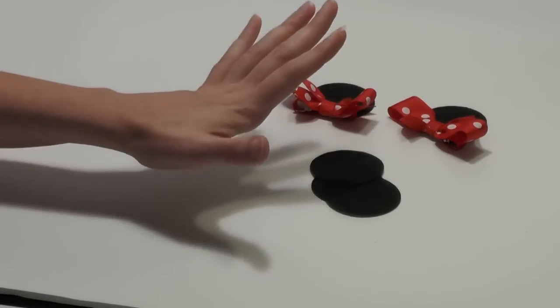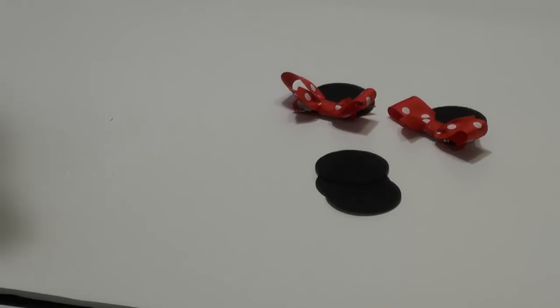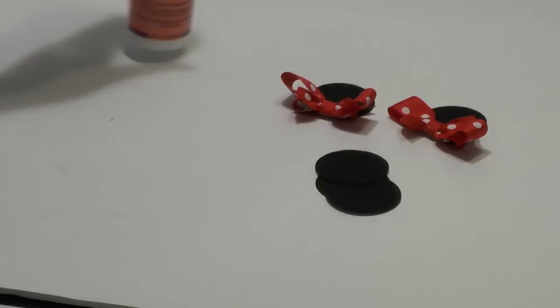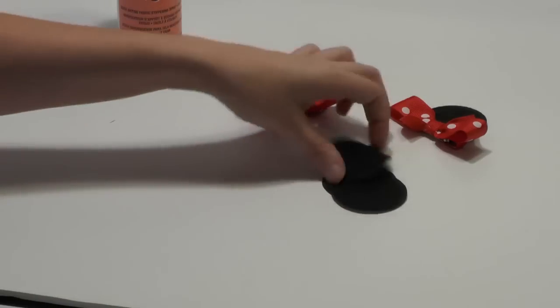If yours are not the stiff material, you can use your fabric stiffener and just spray them until they're stiff, and then they won't have any trouble holding up. You can also double layer.